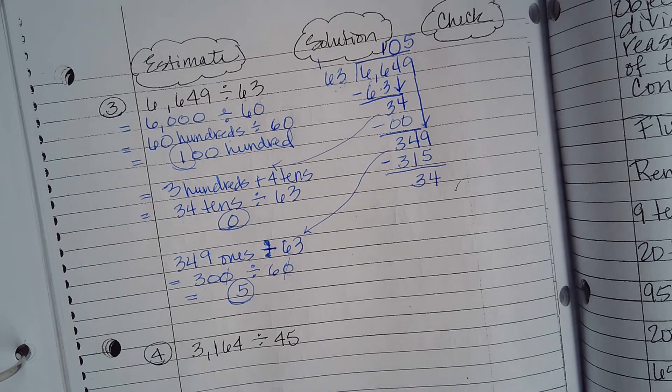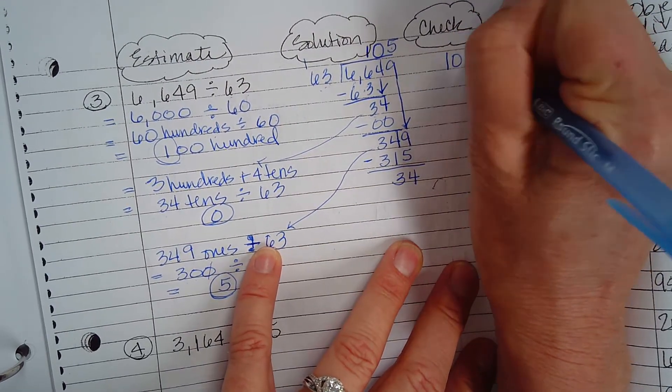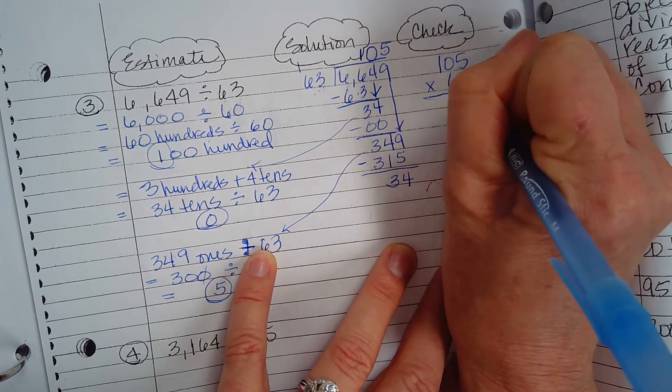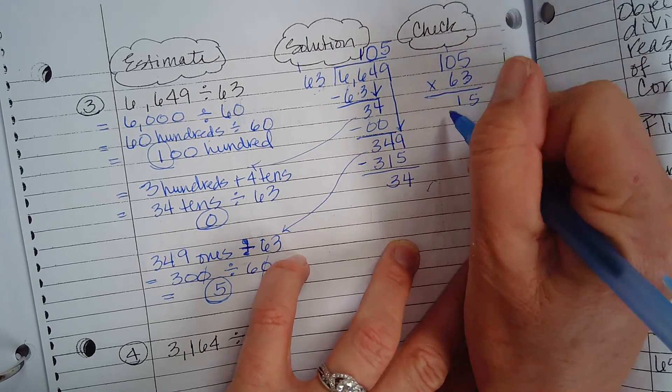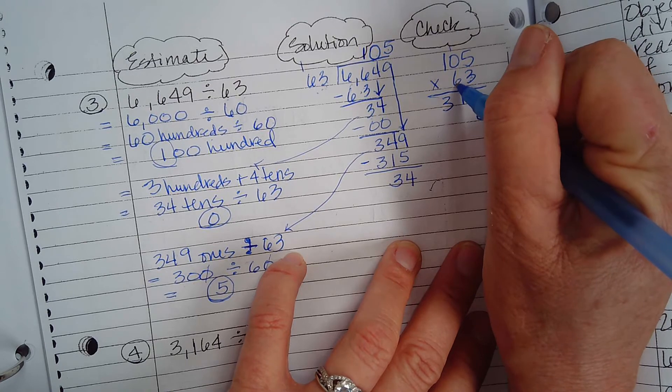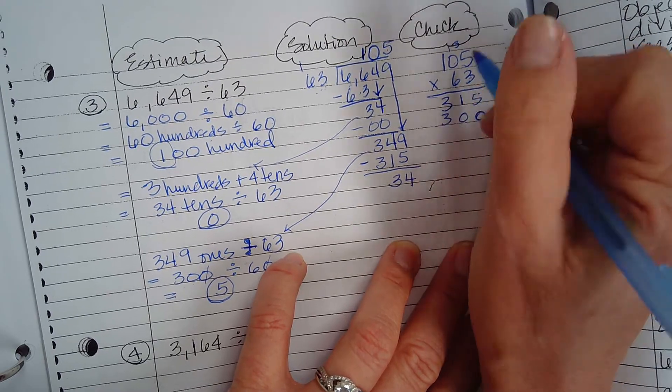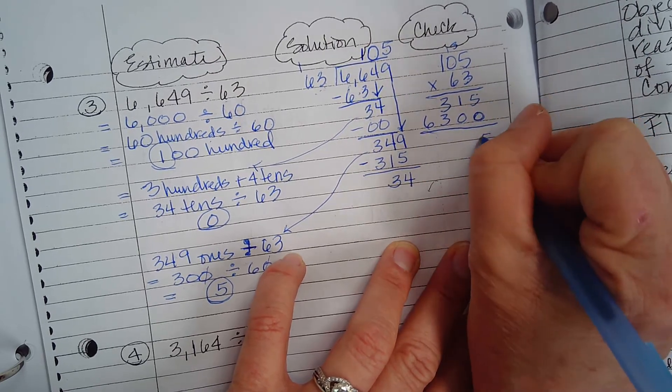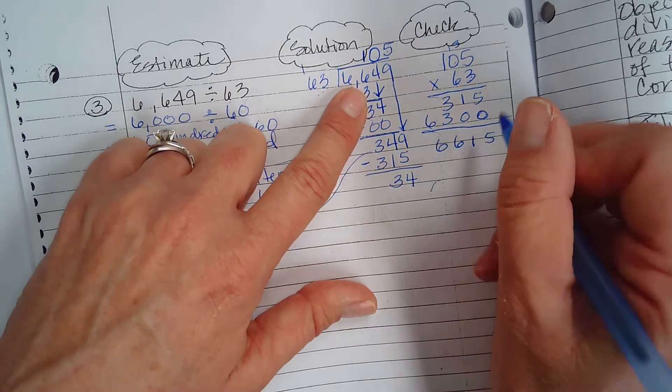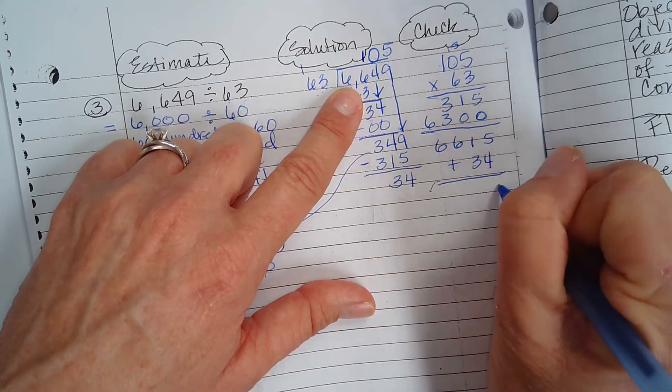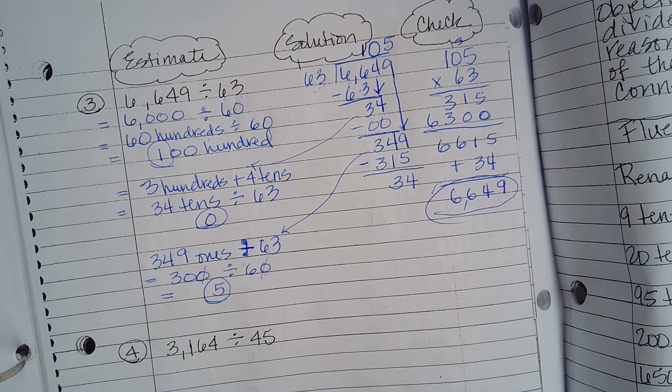Let's check. We're building our strength in multiplication and division. 105 times 63. 5 times 3 is 15. 3 times 0 is 0 plus 1 is 1. 3 times 1 is 3. Writing down our zero. 6 times 5 is 30. 6 times 0 is 0 plus 3 is 3. 6 times 1 is 6. Add them up: 6,615. We better add our remainder: 9, 4, 6. Did we end up in the right place? Yes, we did.